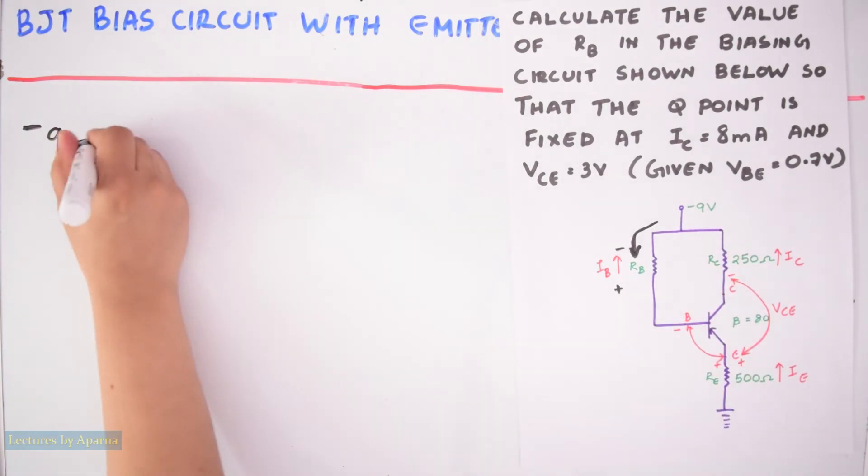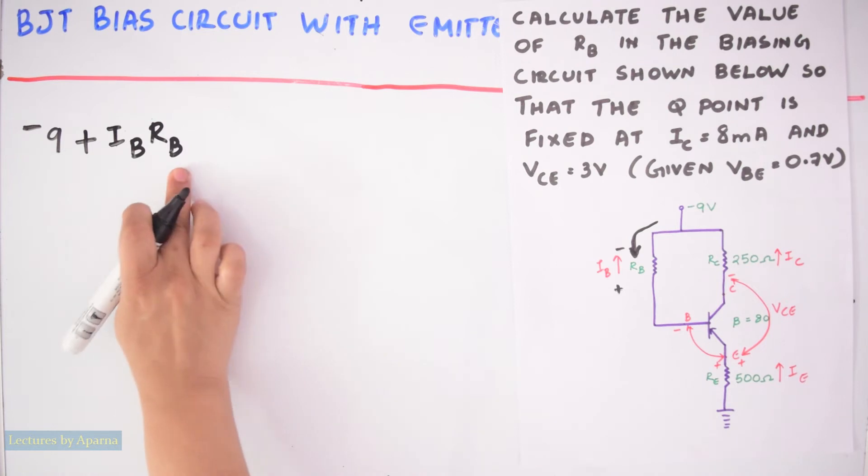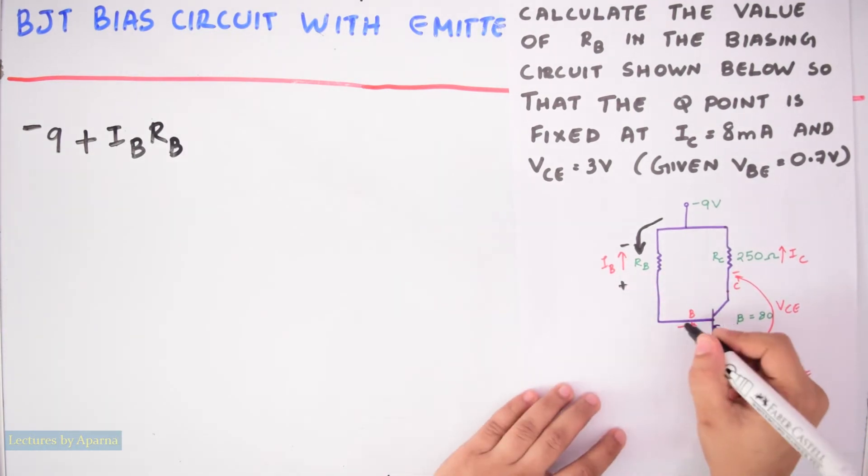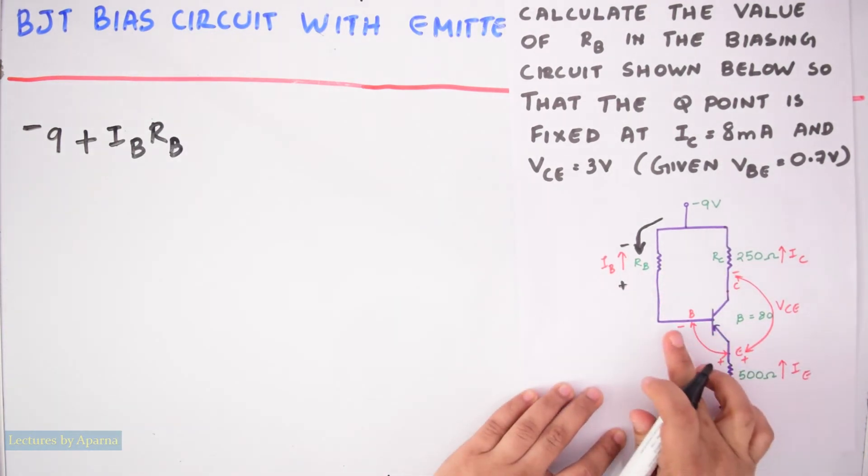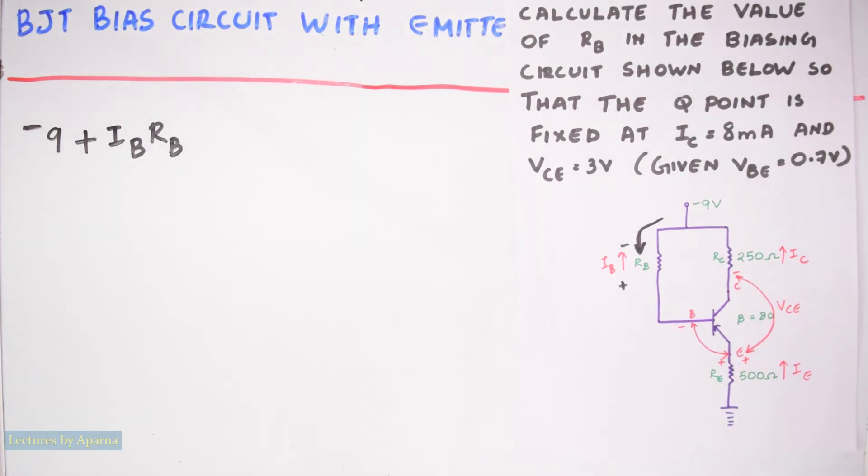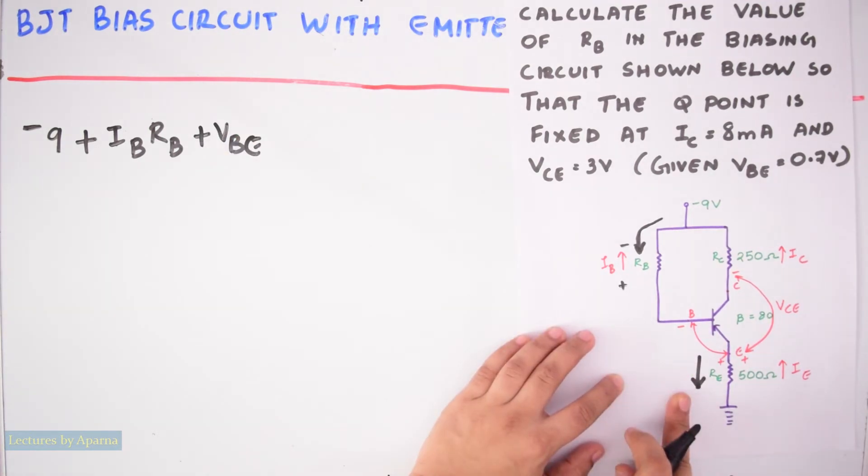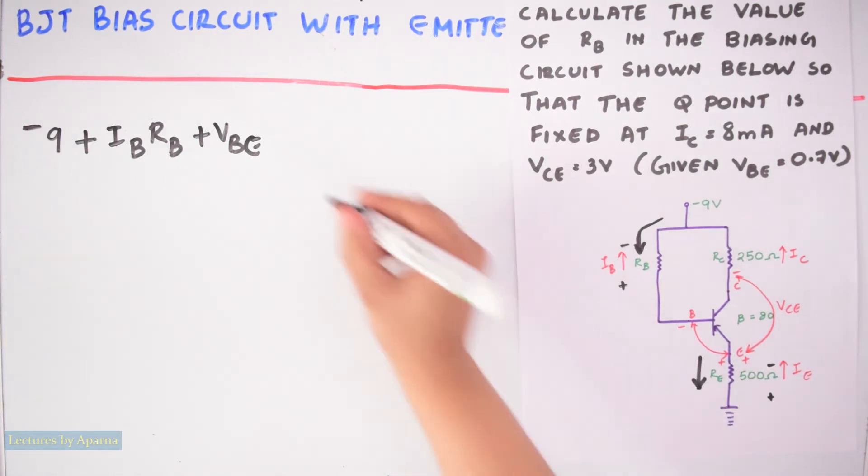So we have to put plus IB RB. This is the voltage across this RB. Now when we again go from here it is again an increase in potential. So it will be plus VBE. Again if we go in this direction current is flowing from a higher potential to lower potential. So when we go in this side it is also an increase in potential. So plus IE RE is equal to 0. Let this be equation 1.